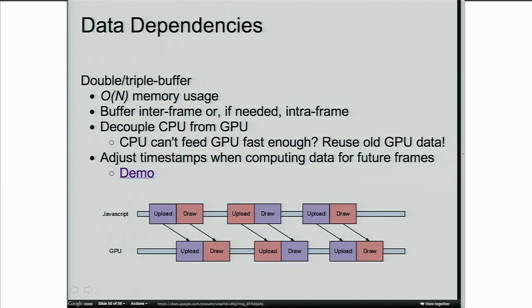If possible and you have the memory, double and triple buffer. This gives benefits for cleanly separating dynamic uploads and allows the GPU to reuse old data when the CPU can't keep up — for example, if a garbage collection on the CPU causes a frame miss, the GPU can use the previous frame's texture atlas and still present a frame to the user. There are a whole bunch of fun tricks enabled by this approach.